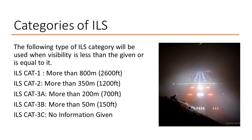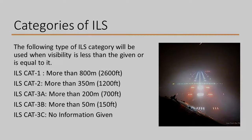CAT 3B allows an aircraft to approach if visibility is more than 50 m. There is also CAT 3C, but specific visibility information for it is not available here. There are also 2 special types of CATs which will not be discussed in this video — you may refer to Wikipedia or the video description for more details.